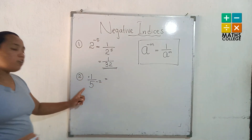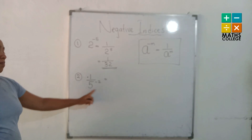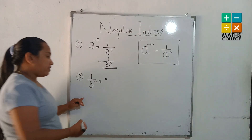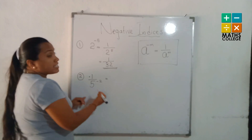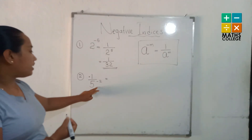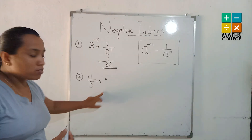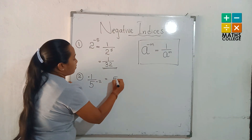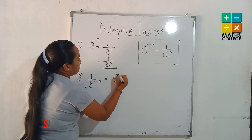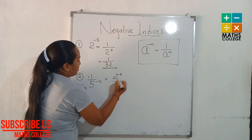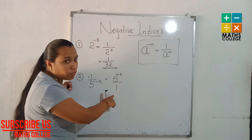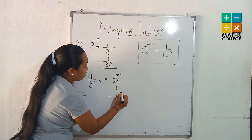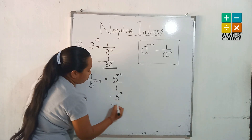The second one: 1 over 5 to the power minus 2. We can't find the answer directly with a negative index, so convert it to positive. The 5 to the power minus 2 in the denominator moves to the numerator as 5 to the power 2, leaving 1 in the denominator. The answer is 5 to the power 2, which equals 25.